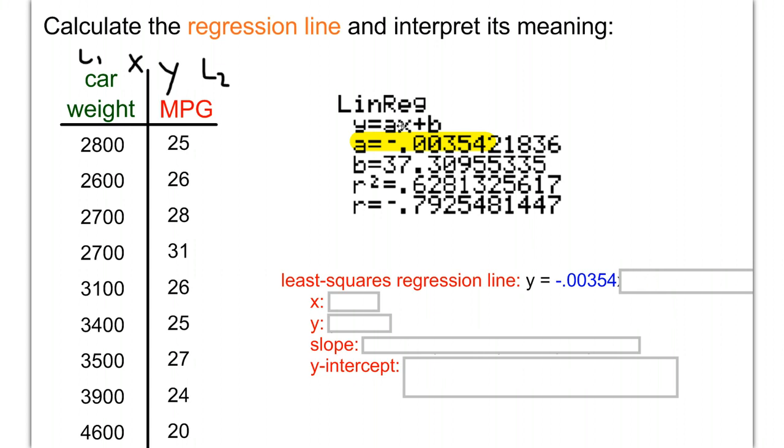After a, we have x, which is still a variable. Then we add b, another value we were given. Our regression line equation is y equals negative 0.00354x plus 37.3.